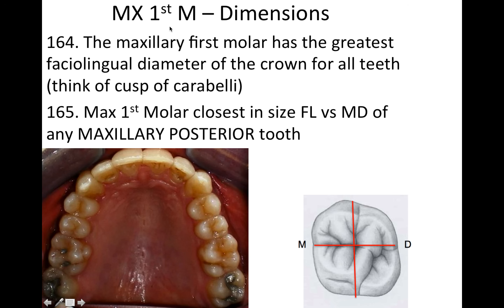Now we'll get into dimensions. The maxillary first molar has the greatest facial-lingual diameter for the crown of all teeth — think of the cusp of Carabelli here, going from buccal to lingual, that tooth has the greatest dimension in that direction. The maxillary first molar is also the closest in size facial-lingually and mesial-distally of any maxillary posterior tooth.